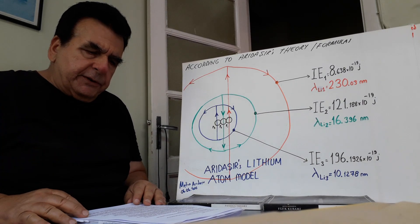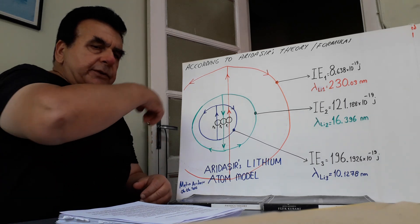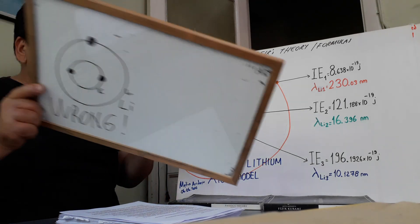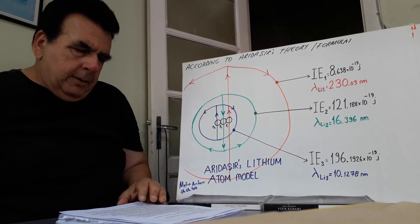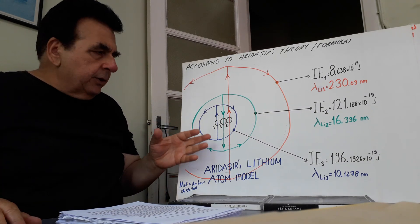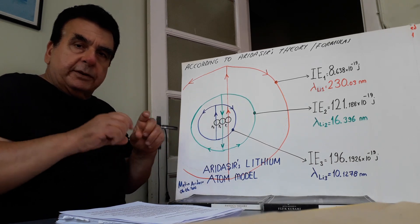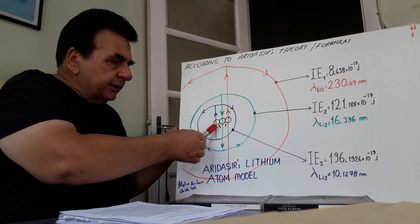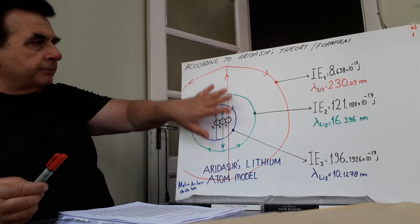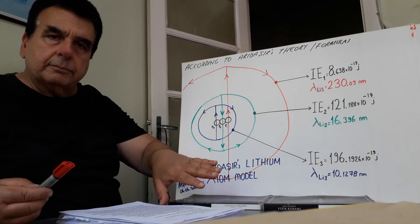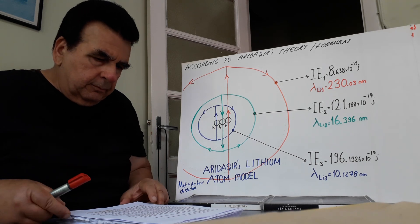Each shell represents only a specific proton-bound electron motion form. An electron doesn't revolve around an atomic nucleus. Here, the smallest part is connected via a proton chain. This is the third proton, second proton, and first proton for lithium. Per proton, only one electron motion form.